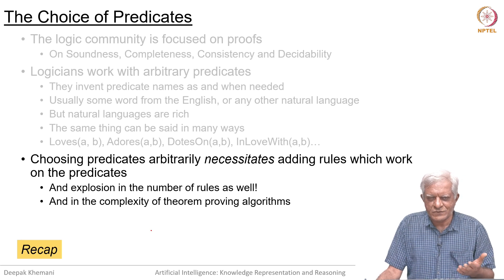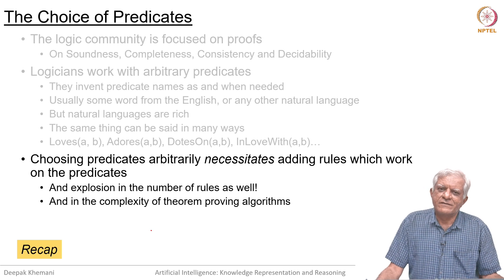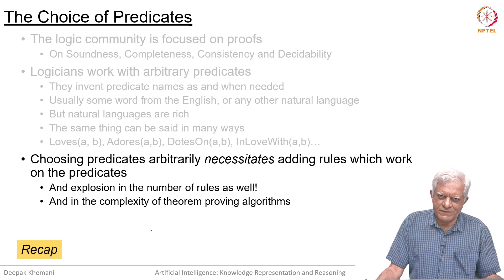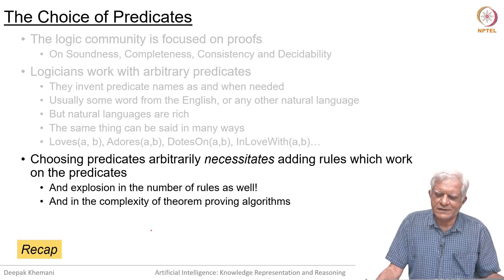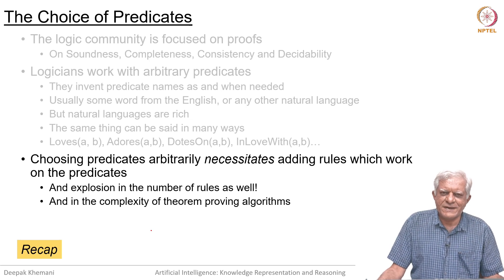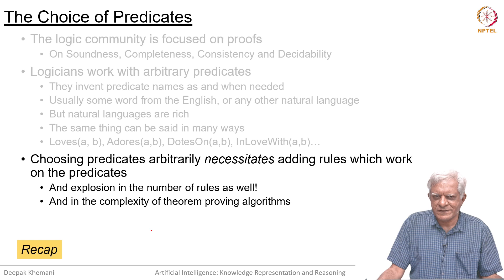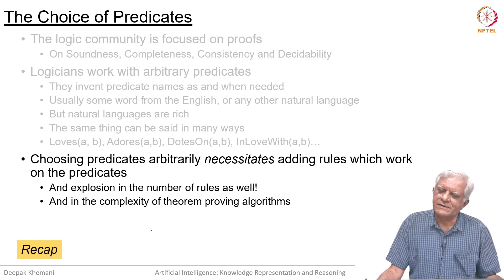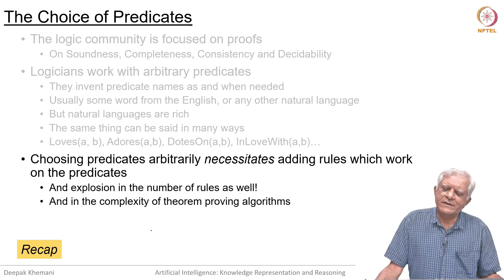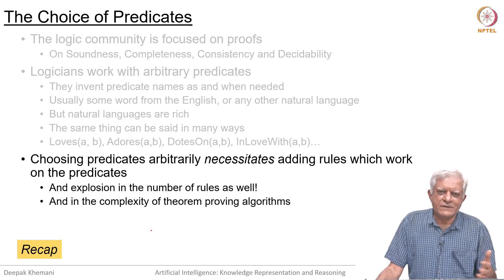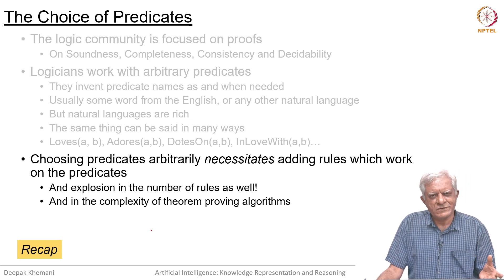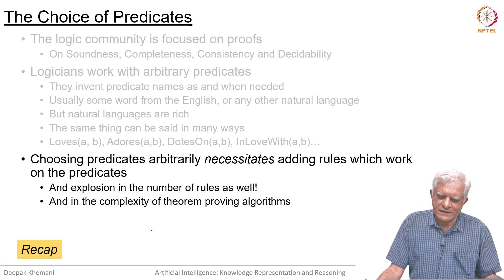The more the number of predicates you choose, the more the number of rules you would have to add, which basically means that choosing arbitrary predicates from English language does not make sense, because for every such predicate you would have had to write rules. We had seen that we could use something like WordNet to translate them into synonyms, but that is another way of doing things.